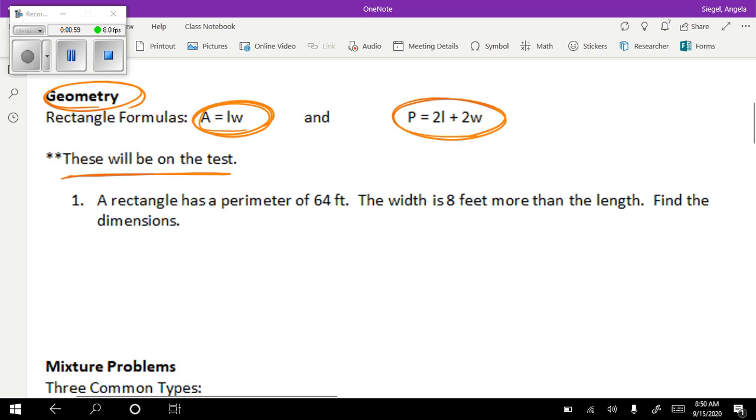Let's go to number one, and I have a feeling it's going to use one of those two. A rectangle has a perimeter of 64 feet. So we know that all the way around, that's going to equal 64 feet. The width is 8 feet more than the length. So I'm going to call the length x, and so the width, if it's 8 feet more, it's going to be x plus 8.